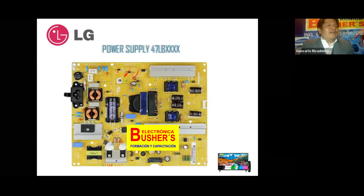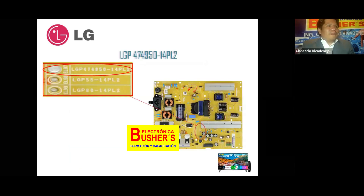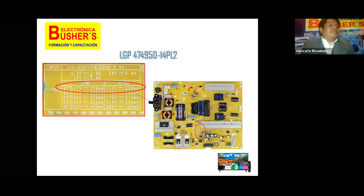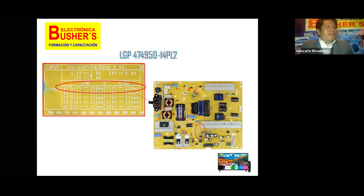Estas tiras LG vienen en estos televisores operando con la fuente que vemos en la presentación. Esta fuente viene para tres versiones: la versión para modelos de 47, 49 y 50 pulgadas, la versión para 55 pulgadas y la versión para 60 pulgadas. En este caso nos ubicamos en la fuente para 47 pulgadas, la cual nos indica: tensión máxima aplicable 117 voltios, 230 miliamperios para ambos canales, para el canal inferior y para el canal superior.